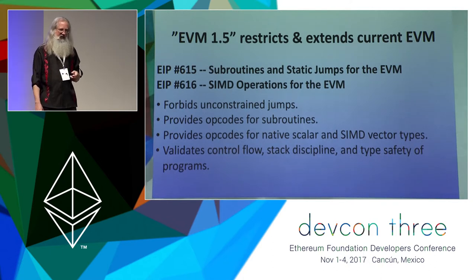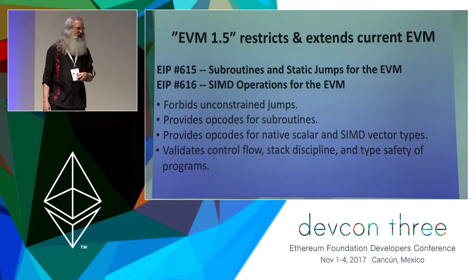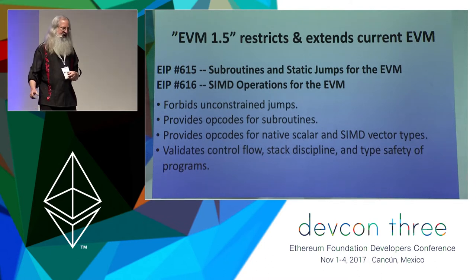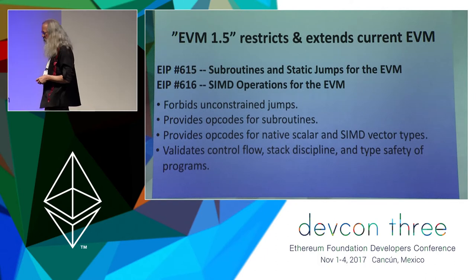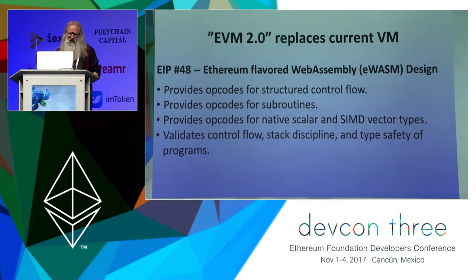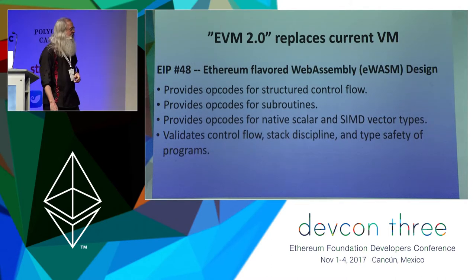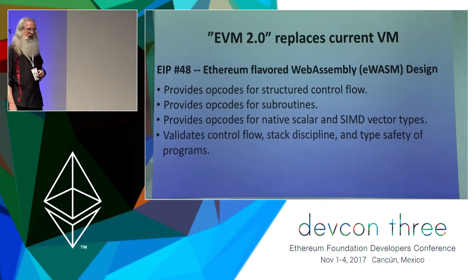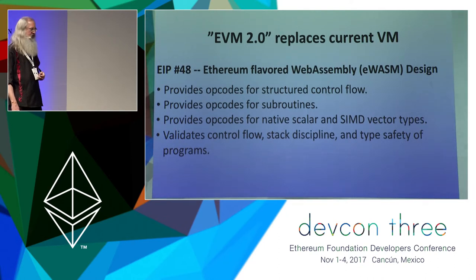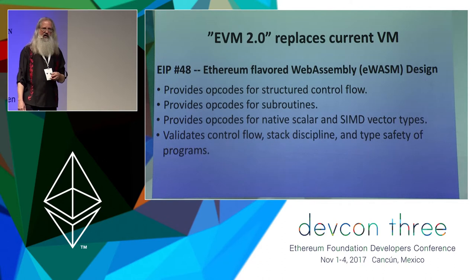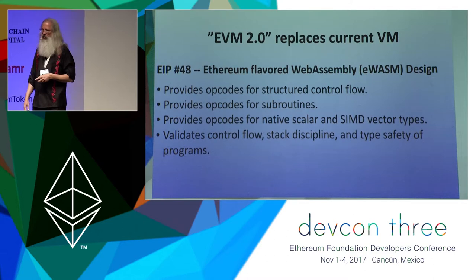If you go to Google and type 'SIMD crypto' you get a lot of results, so it would be useful to make that hardware available. At deployment time there's a validation phase that goes through the code and makes sure it actually follows the rules. For EVM 2.0, it provides opcodes for structured control flow — stricter than 1.5, actually looking like a high-level language with if-else and such. It provides opcodes for native scalars, SIMD is coming later, and it also has a validation phase for control flow, stack discipline, and type safety.